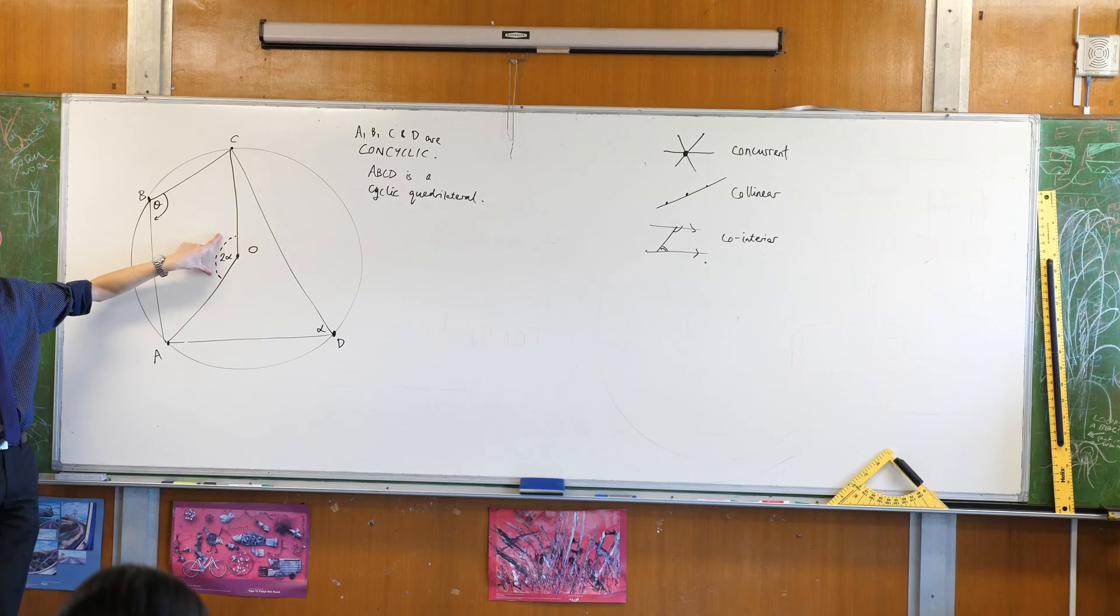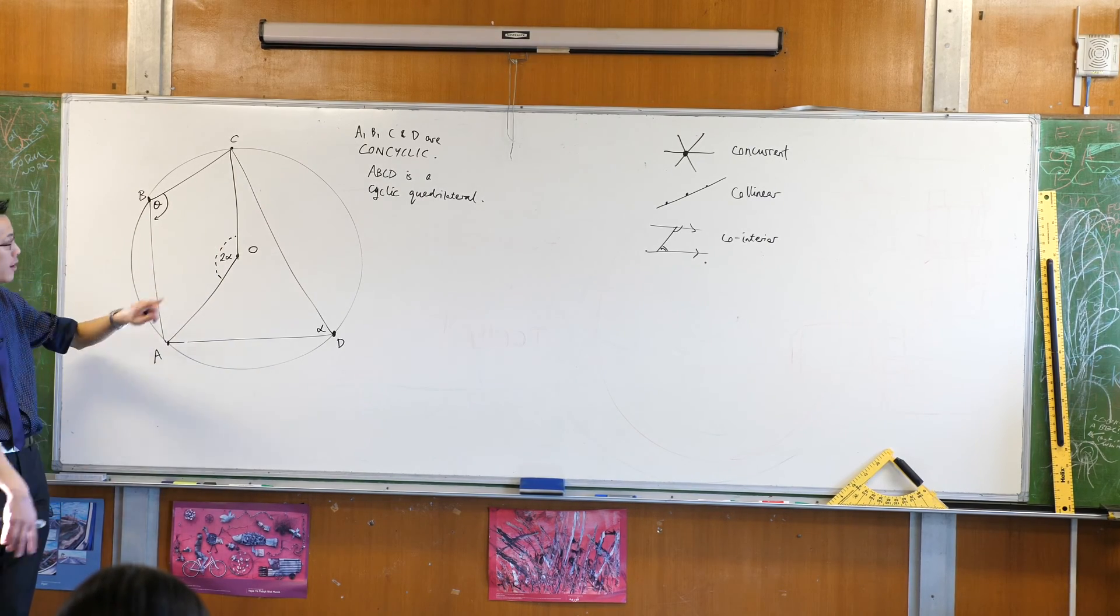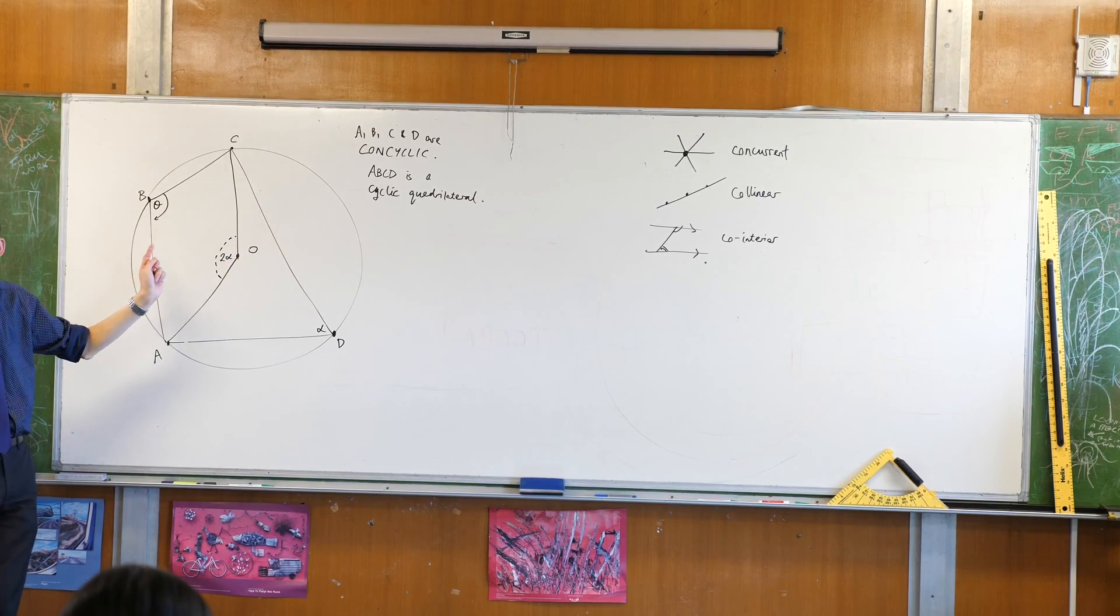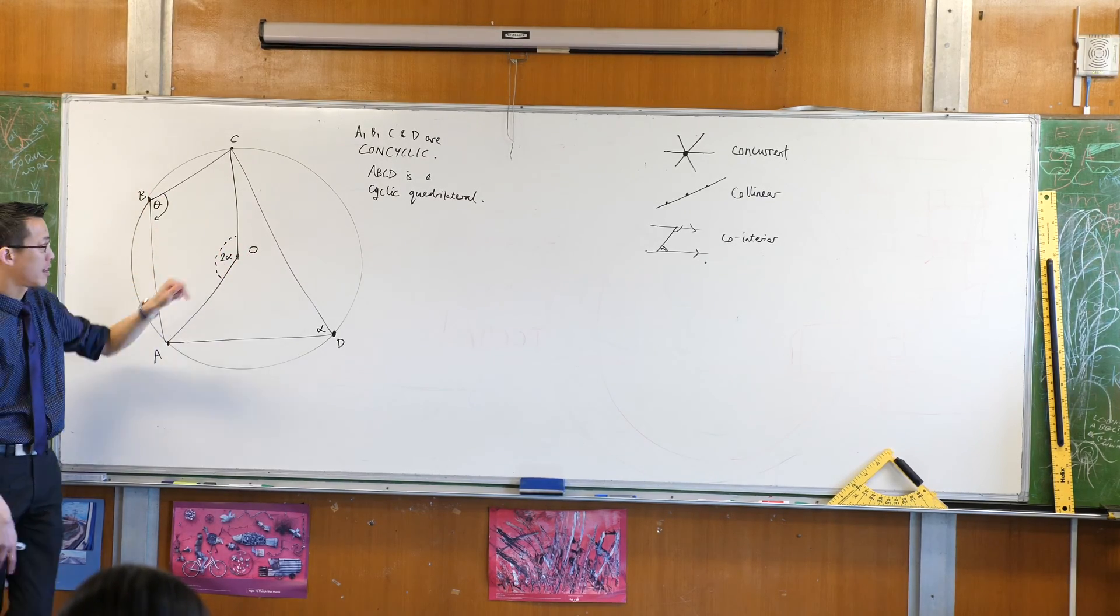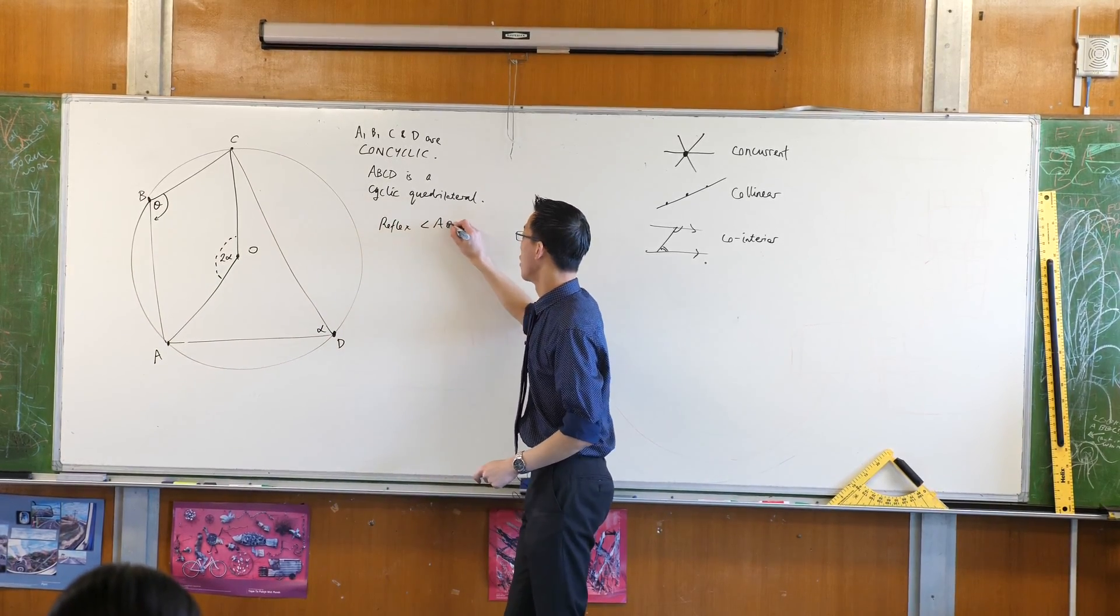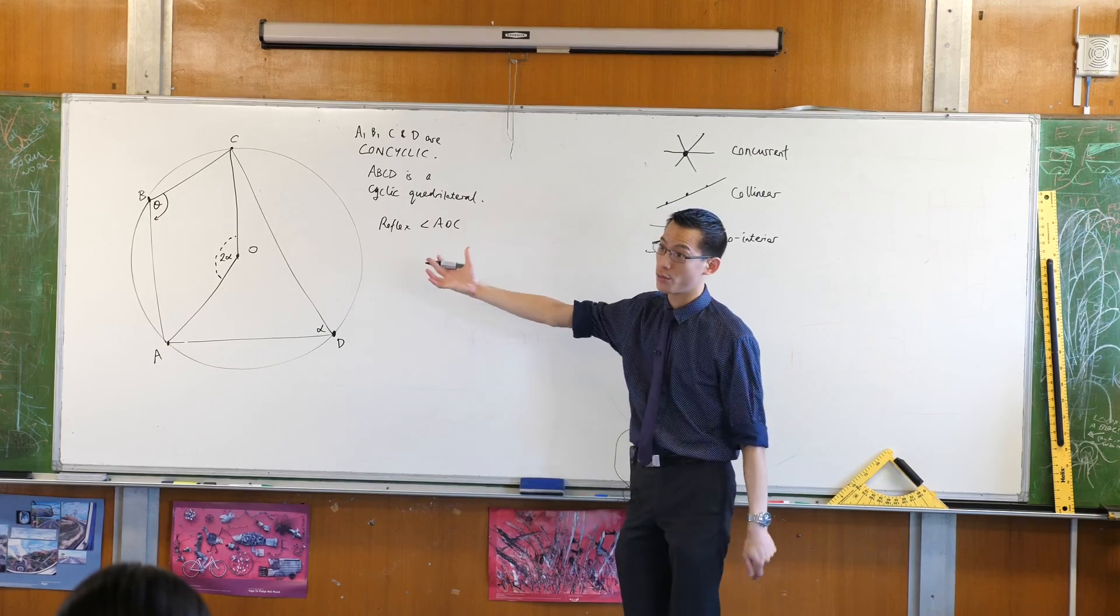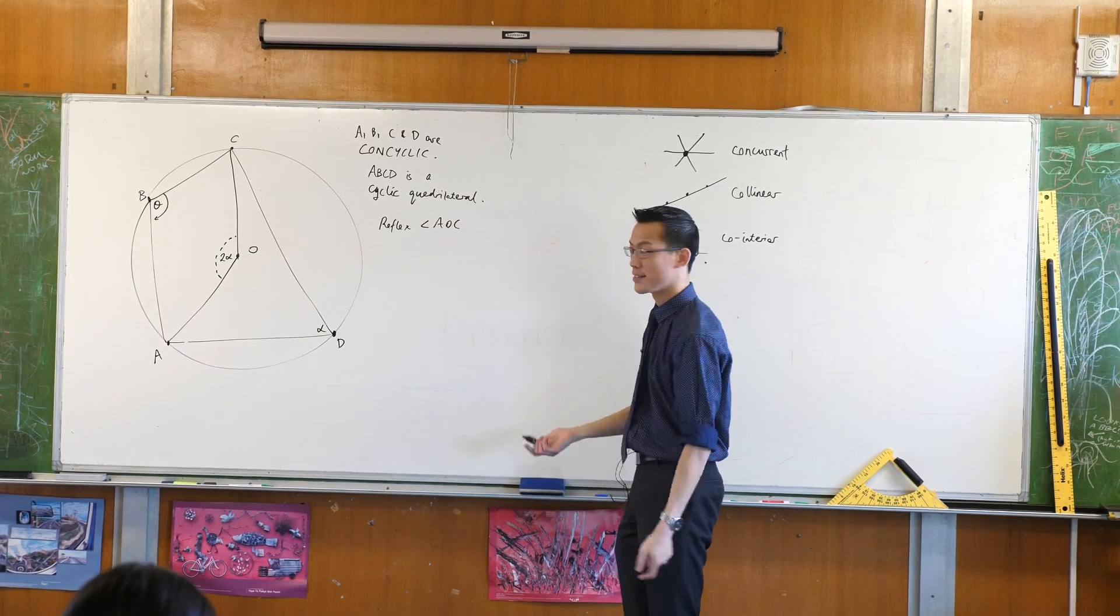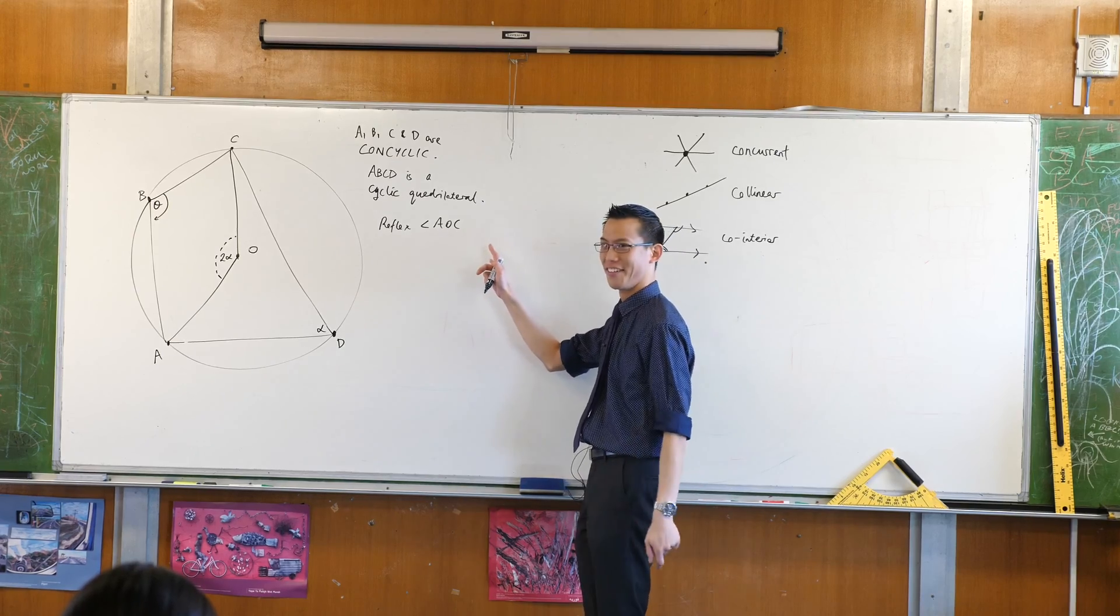This angle over here, it's an obtuse angle, isn't it? At least that's the way we've drawn it, okay? That makes the angle on the other side not an obtuse angle. It's going to be a reflex angle. So you would actually name that, you would say reflex angle AOC. That's the way you would actually refer to that angle. It's a little bit awkward but there's no other unambiguous way that's succinct. It's certainly better than saying on that side.